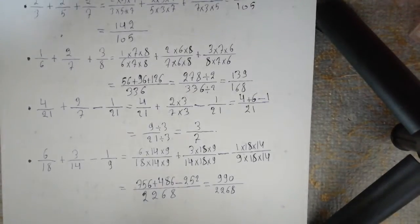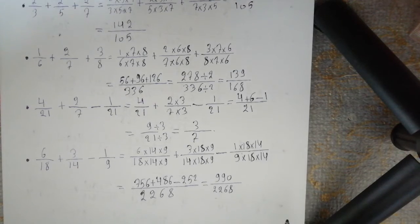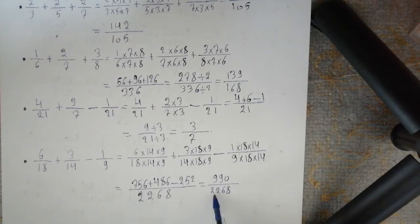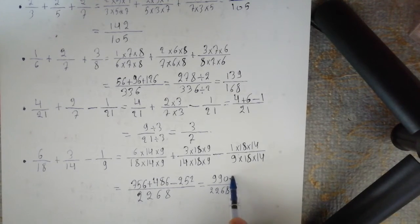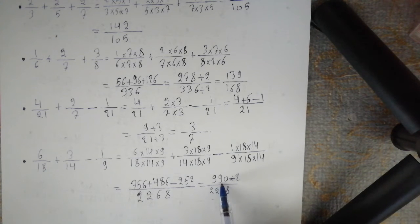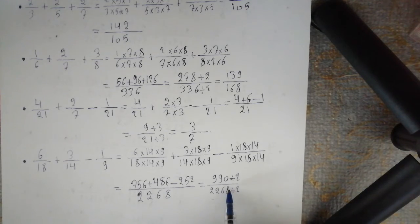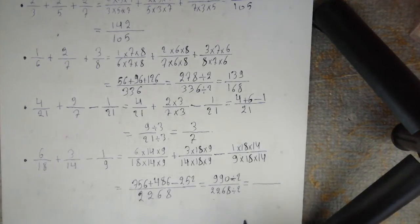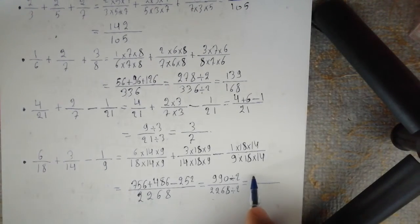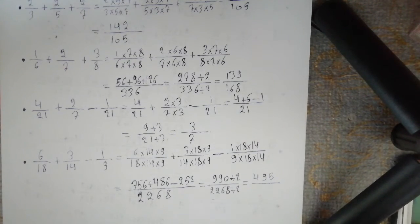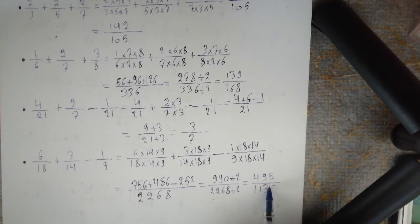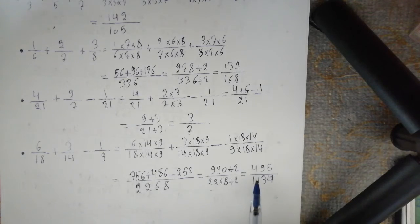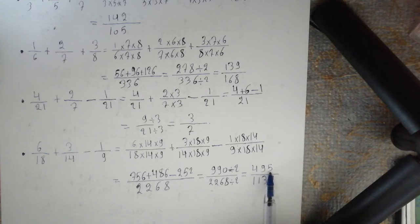Between 990 and 2268, the first common divisor is 2, since 990 ends in 0 and 2268 ends in 8, both divisible by 2. So 990 divided by 2 equal to 495, and 2268 divided by 2 equal to 1134. Now 495 is not divisible by 2 since its ones digit is 5.